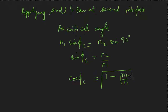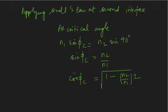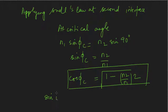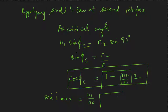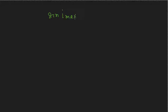From sin(phi_c) = n2 / n1, I can find cos(phi_c) = √(1 − (n2/n1)²). Substituting this into equation 2, sin(i_max) = (n1 / n0) × √(1 − (n2/n1)²), which simplifies to sin(i_max) = √(n1² − n2²) / n0.